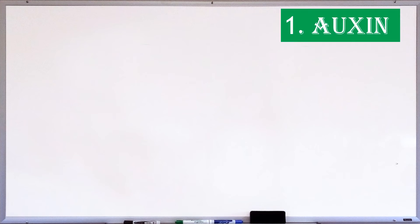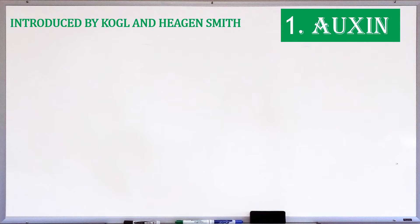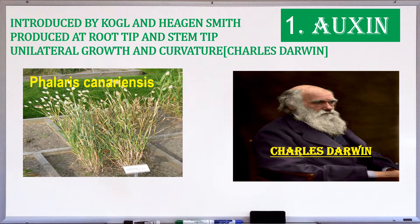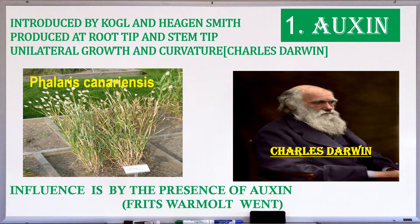Let's learn auxin in detail. The term auxin was introduced by Kögl and Haagen-Smit. Auxins are produced at the stem tip and root tip, from where they migrate to the zone of elongation. Charles Darwin observed unilateral growth and curvature in coleoptiles of canary grass, botanical name Phalaris canariensis, and came to the conclusion that some influence was transmitted from the tip to the basal region.